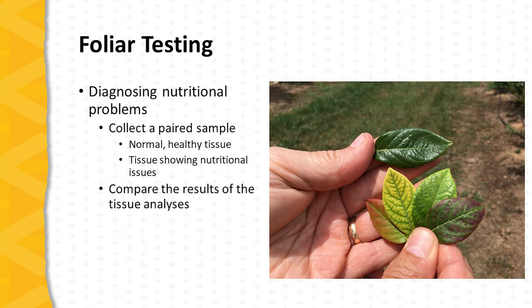Foliar testing is also a useful way to help diagnose nutritional problems in fruit crops. As we see in this picture, blueberry nutrient deficiencies can look like various types of foliar symptoms, and it can be difficult from just a visual analysis to determine the underlying cause. In the case of a foliar test, twin samples are collected — one including healthy foliage and the other including foliage exhibiting the deficiency symptoms. The results are then compared, and if differences are seen in the relative amounts of particular nutrients, this can indicate that these nutrients are contributing to the visual symptoms.